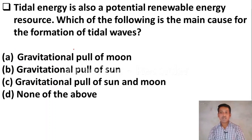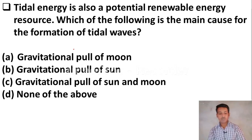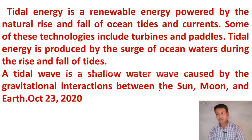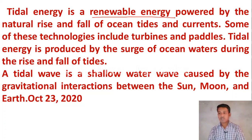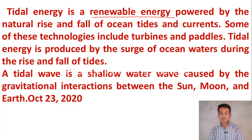Next question: tidal energy is also a potential renewable energy resource. Which of the following is the main cause for the formation of tidal waves? Option A, gravitational pull of the moon. Option B, gravitational pull of the sun. Option C, gravitational pull of the sun and moon. Option D, none of the above. The right answer is Option C — gravitational pull of the sun and moon. Tidal energy is a renewable source of energy. Technologies include turbines and paddles. Tidal energy is produced by the surge of ocean waters during the rise and fall of tides, and a tidal wave is caused by the gravitational interactions between the sun, moon, and Earth.